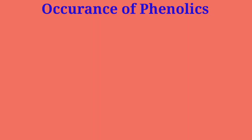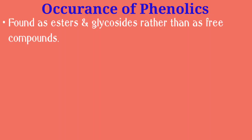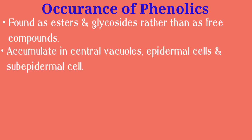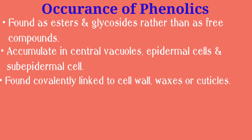Occurrence of phenolics: they are usually found as esters or glycosides rather than as free compounds. Polyphenols accumulate in central vacuoles of guard cells, epidermal cells and sub-epidermal cells of leaves and shoots. Some are found covalently linked to the plant cell wall, and some are found in waxes or on the external surface of the plant organs.